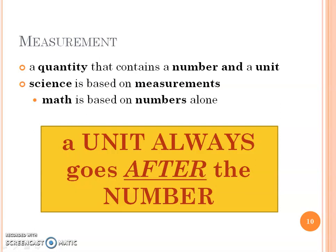So a measurement we want to remember is a quantity, that's the actual value or the number, and a unit. And I've mentioned this multiple times. Science is really based on measurements. Math is numbers alone, two plus two. But in science, two doesn't really mean anything to scientists.